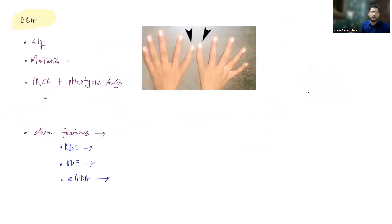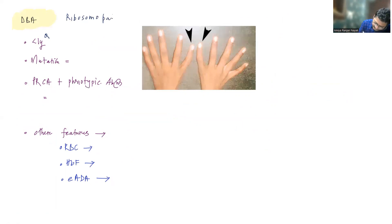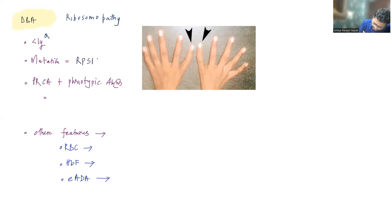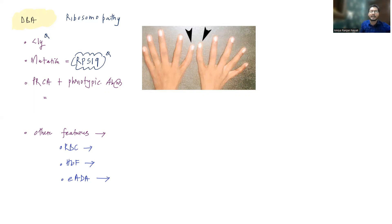Diamond-Blackfan anemia is a condition found in infants, presenting in less than one year of age. It is a ribosomopathy — a ribosomal biogenesis disorder — meaning that certain proteins involved in ribosome biogenesis are mutated. The most important mutation is RPS19, found in around 20 to 25 percent of cases. These patients, along with pure red cell aplasia, will also have phenotypic abnormalities.